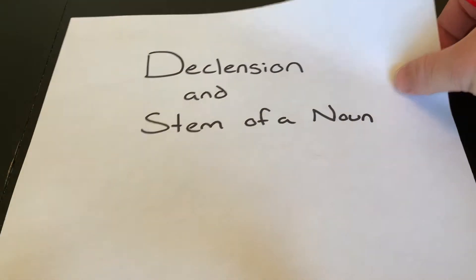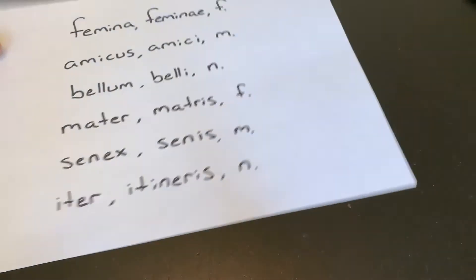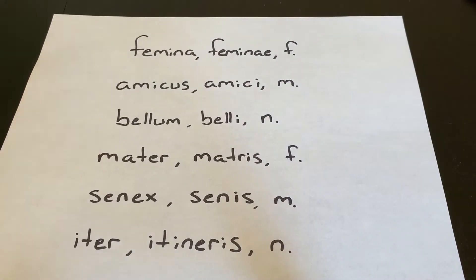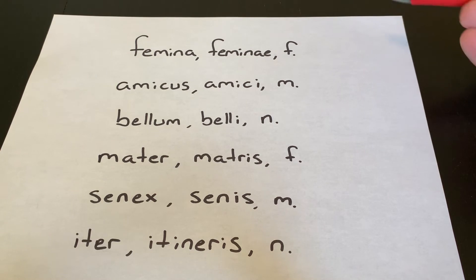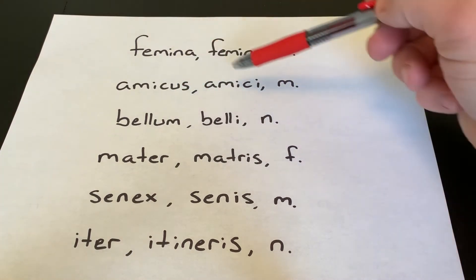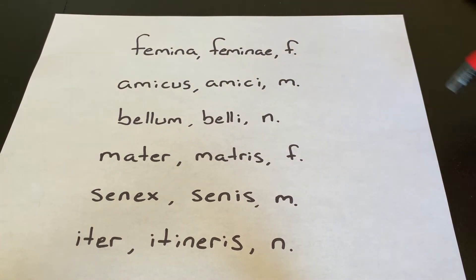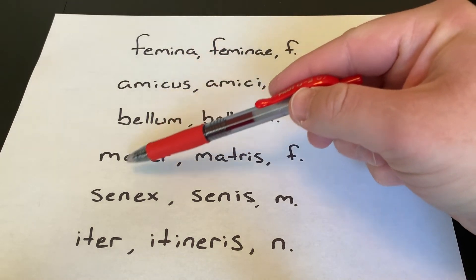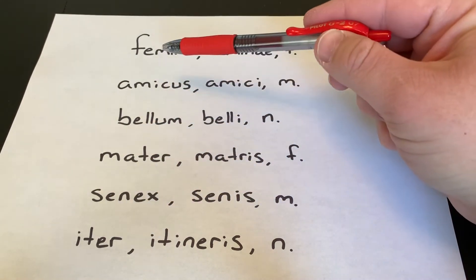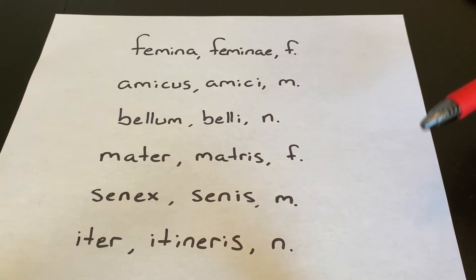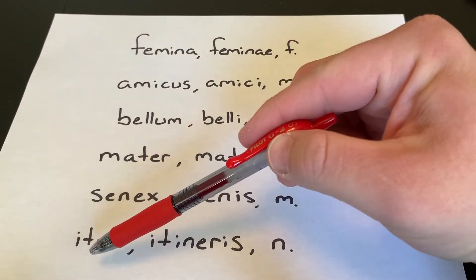So first let's take a look at some words. When you look in a dictionary or on a vocab list you'll see the words listed like this. It will always give you two words and then the gender. And this first word is always the nominative, usually the nominative singular. There's a few exceptions where they give you the nominative plural but almost always nominative singular.